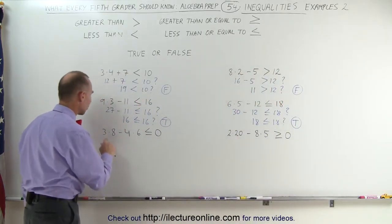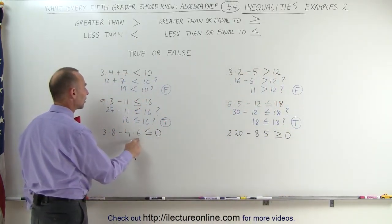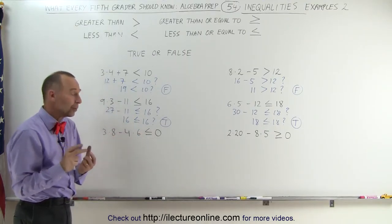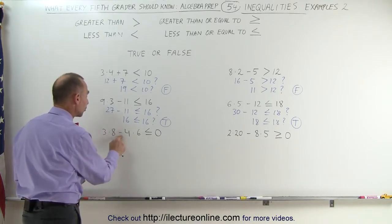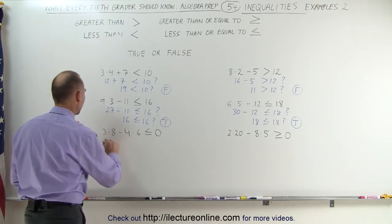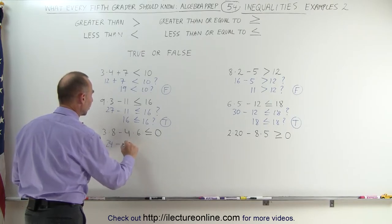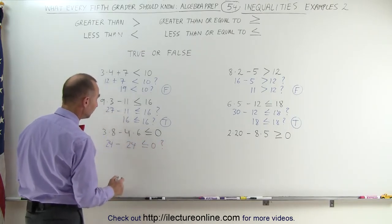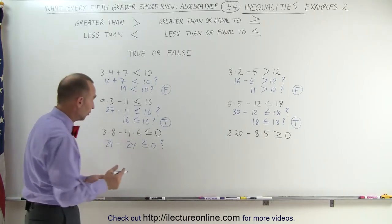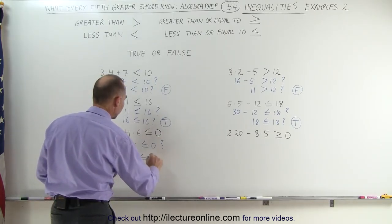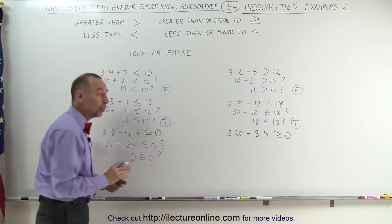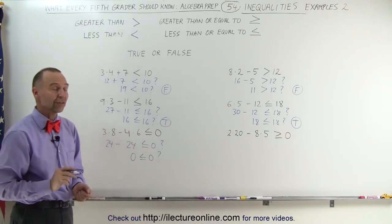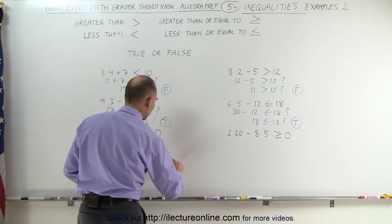Coming back over here, 3 times 8 minus 4 times 6 — is that less than or equal to 0? We have to follow the order of operations: multiplication before subtraction. 3 times 8 is 24, minus 4 times 6, which is 24. Is that less than or equal to 0? 24 minus 24 is 0. Is 0 less than or equal to 0? We know it's not less than 0, but we know it's equal to 0. Since one of the two conditions is satisfied, this must be a true statement.